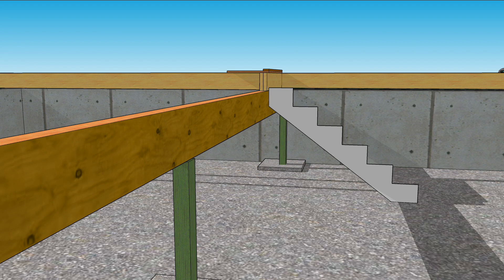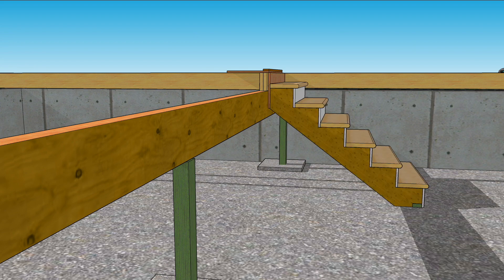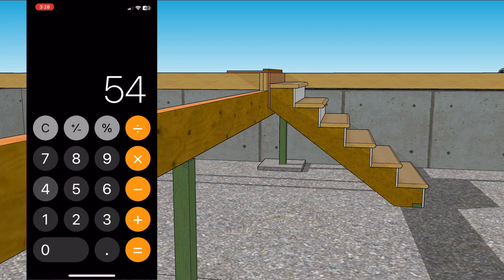Lo and behold, the slab isn't perfectly level. Good thing we measured in two places. Fifty-four divided by seven risers is about seven and eleven-sixteenths strong.